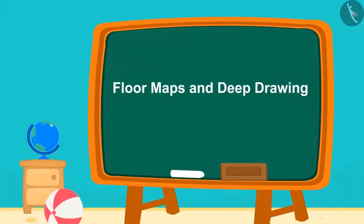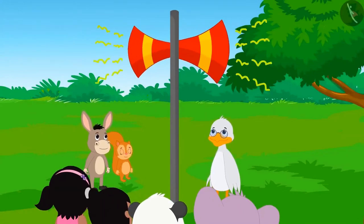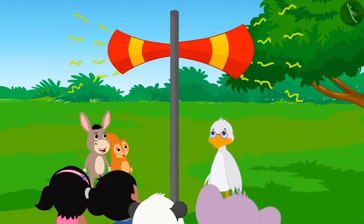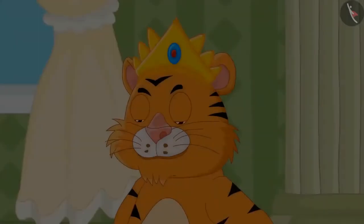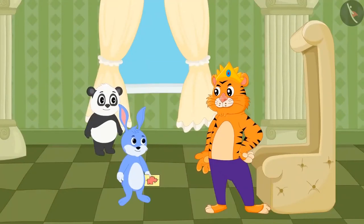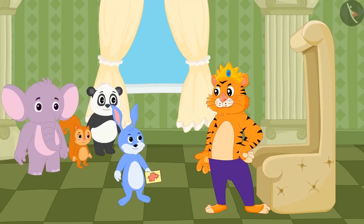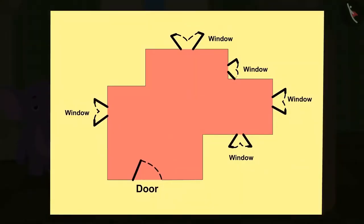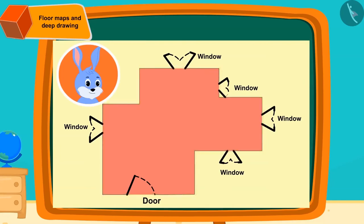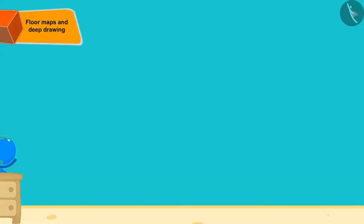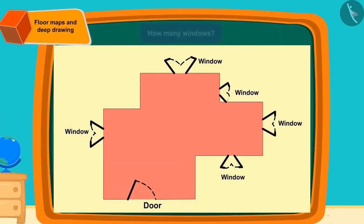What are floor maps and deep drawings, and how can they be made? One day the king announced he wanted to change the design of his room — whoever makes the best design will be rewarded. The very first day, Banni reached the king with a floor map. From the map of the floor of a room or house, we can find out where the windows and doors are. Can you tell by looking at the floor map how many windows there are?